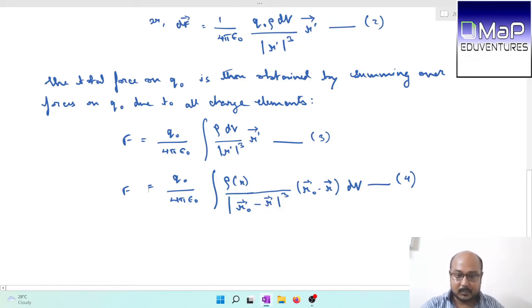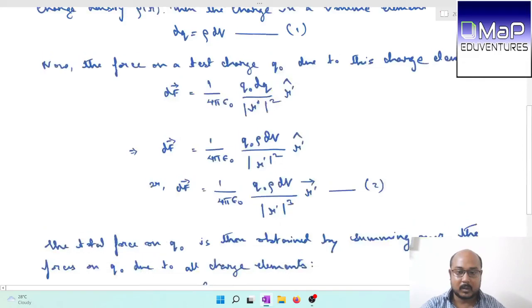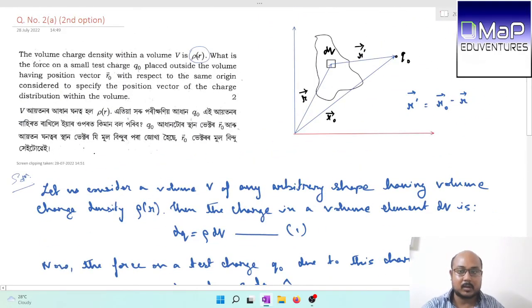Depending on the charge element position, r will change. The final expression for the total force will be 1 by 4 pi epsilon naught integration of rho r by r naught minus r whole cube times r naught minus r dV. It will be a volume integration over the whole volume. So this is all about question 2A second option. The first part of the video ends here, and stay tuned with us for the second part.